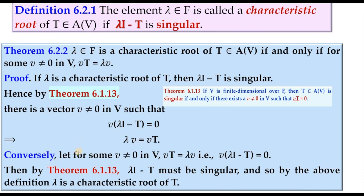For the converse, we assume that for a non-zero vector V in V, the image of V under T is lambda V. This implies the image of V under lambda I minus T is the zero vector. By the same theorem, lambda I minus T must be singular, and by the definition, lambda is therefore a characteristic root of T.